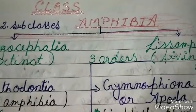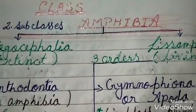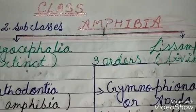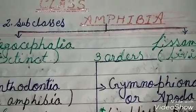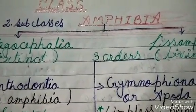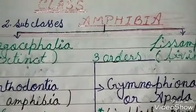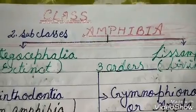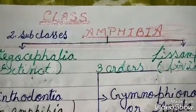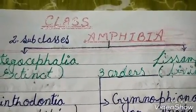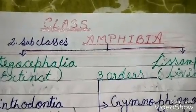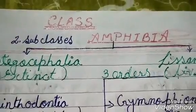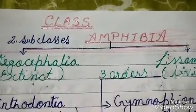Hello and welcome to my class. Today I'm going to discuss the characteristics and outline classification of class Amphibia. Amphibians are aquatic or semi-aquatic freshwater, air and water breathing, carnivorous, cold-blooded, oviparous, tetrapod vertebrates. These are the common characteristics of class Amphibia.